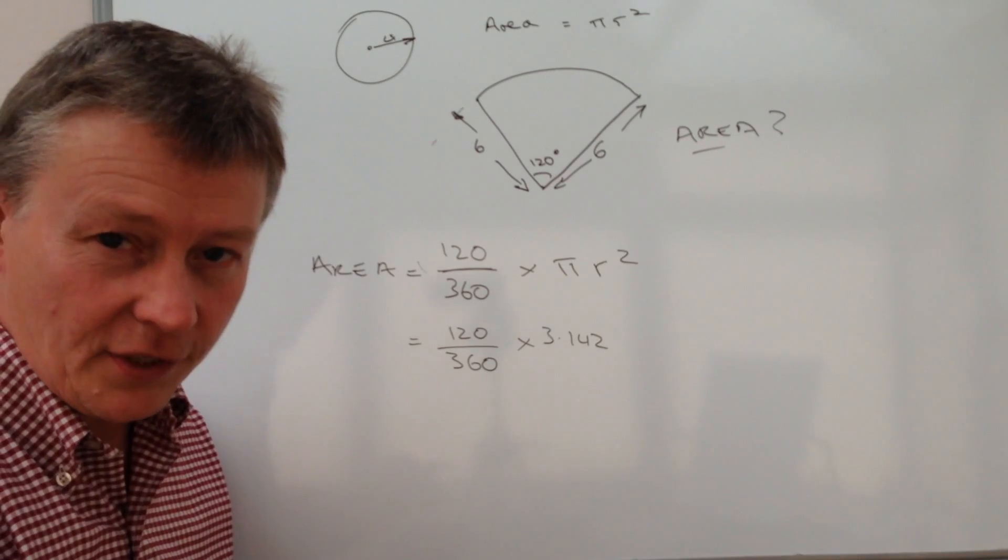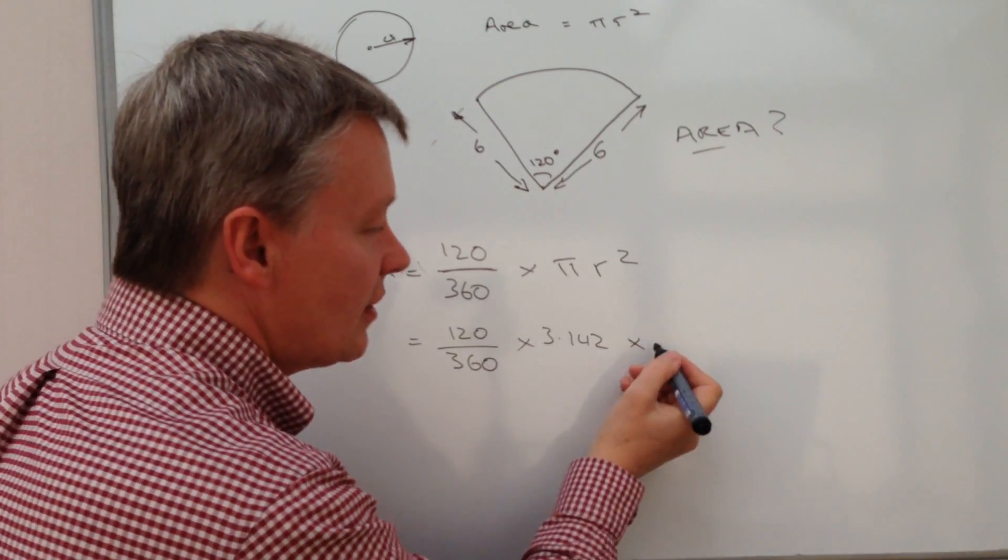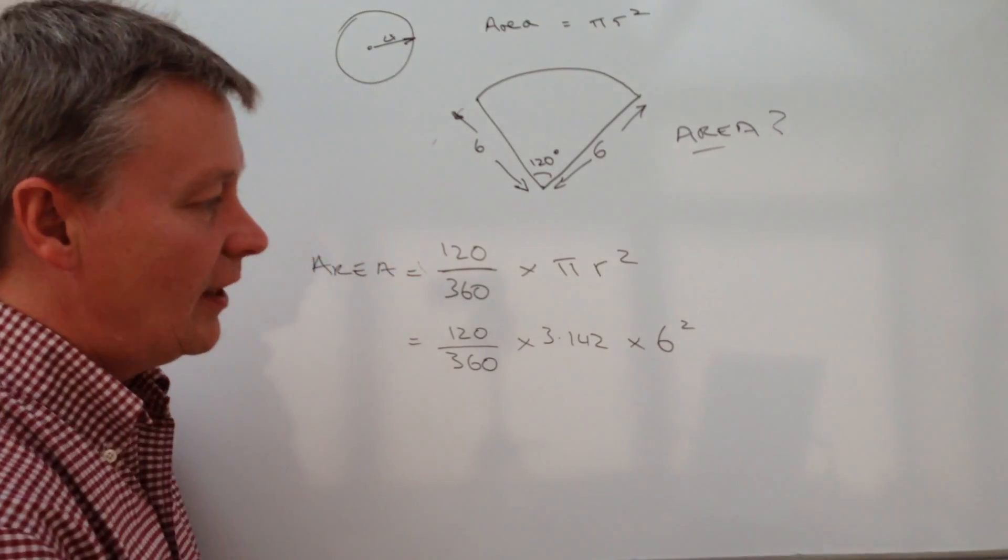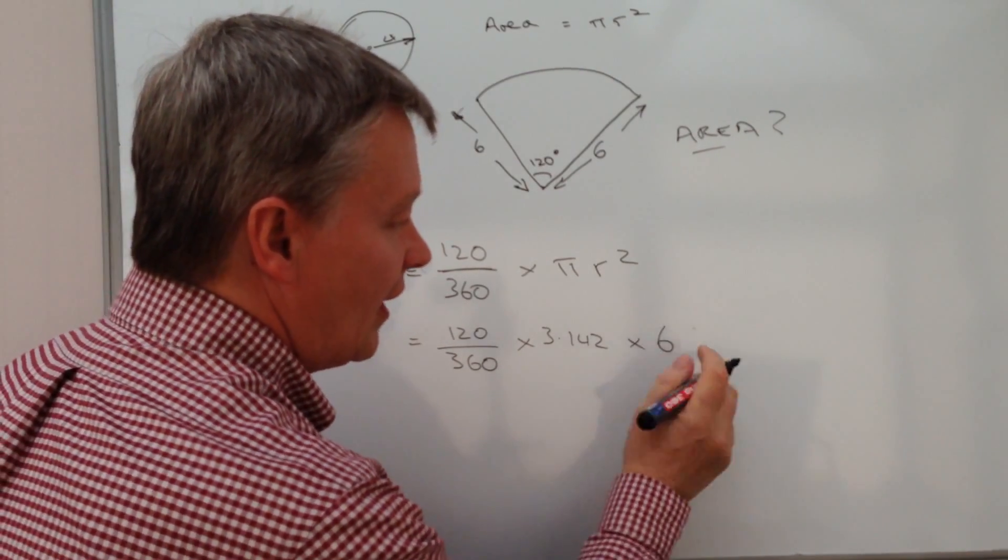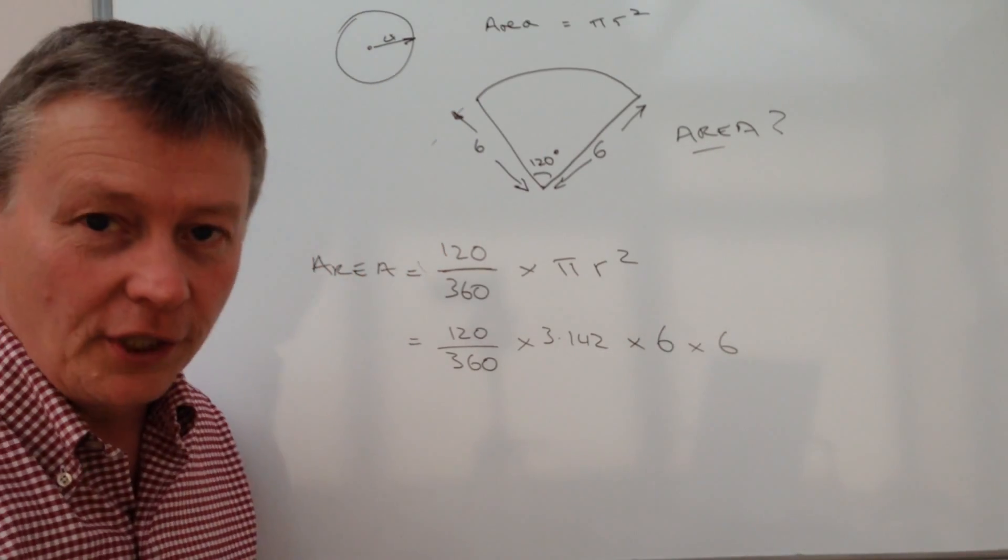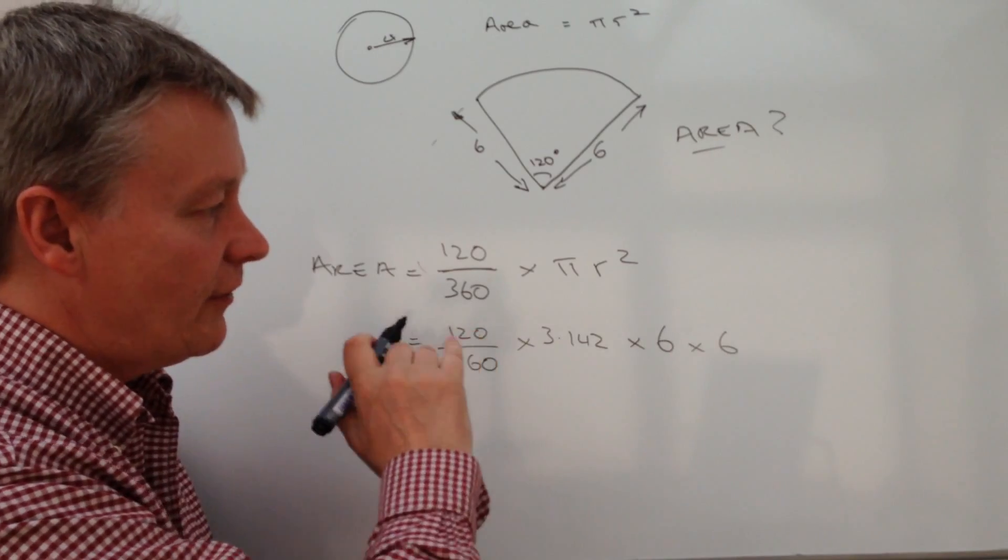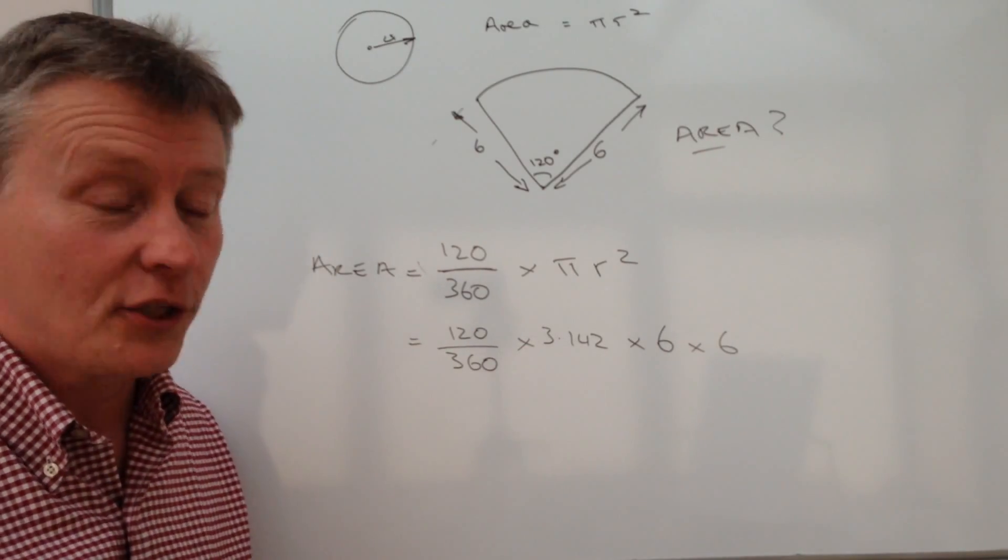And then you're going to multiply that by r squared. Now just be a little bit careful with r squared because r squared means the radius 6 squared. And if you prefer, you can actually write this as 6 times 6. And that can be quite useful to write it out fully just to make sure that you've got the correct calculation.